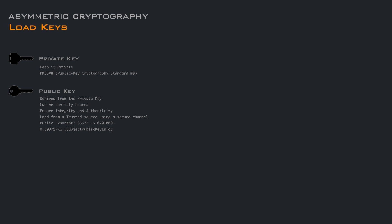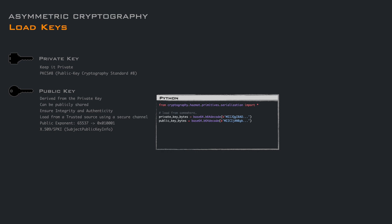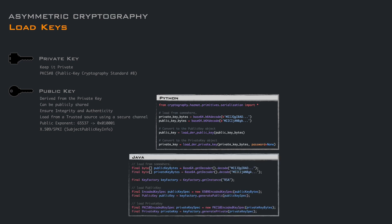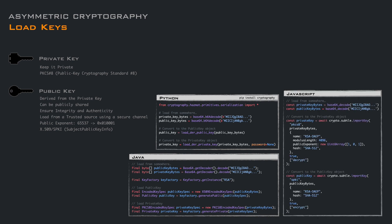Before trying to encrypt something, let's take a look at how to load a key. We can read the exported keys from a file or somewhere else — here we use base64 strings of the exported keys. In Python, there are methods for specific formats that will convert the bytes directly into a key object. In Java, more or less it's the same: we have to get the key factory and use the encoder classes to get back the public or private key object. In JavaScript, the importKey method requires a lot more information beyond the format, like the algorithm we are going to use and the operation we are going to perform with that key.